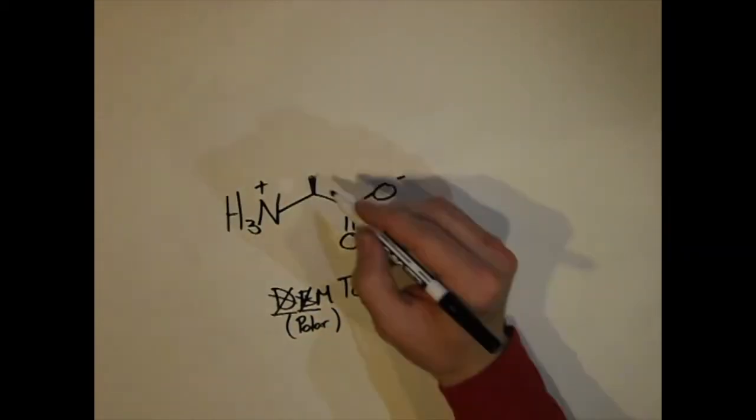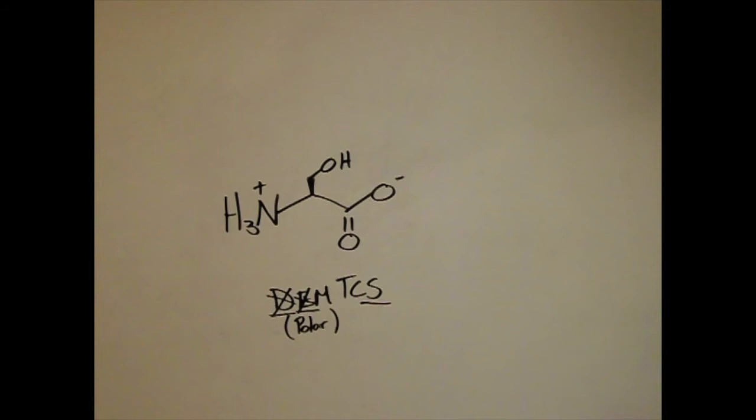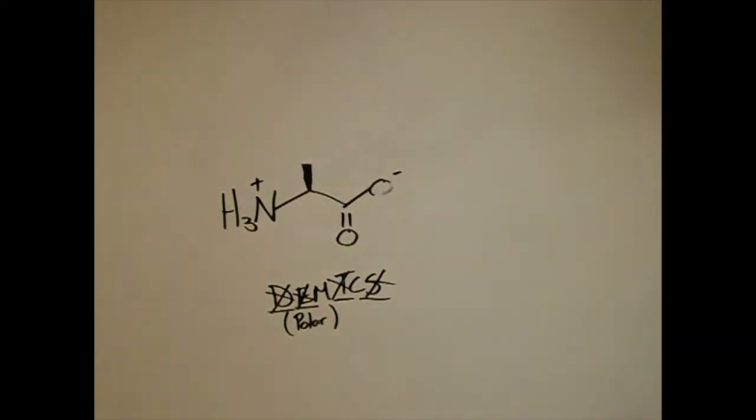Next up we have serine. In serine the only side chain is a hydroxy group. The third in this group is threonine. Threonine is just like serine but with an extra methyl group. Next up we have cysteine. Cysteine looks a lot like serine but with a sulfur instead of an oxygen.